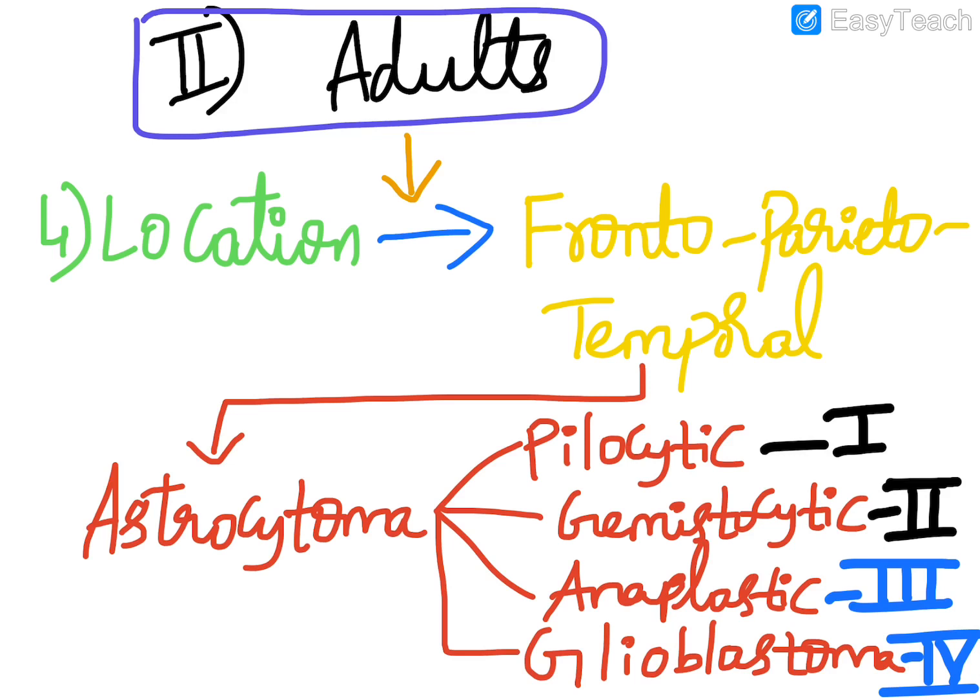Previously, glioblastoma multiforme was the term used for grade four astrocytoma, but the term 'multiforme' has been removed. It is now called simply glioblastoma, which is the grade four type of astrocytoma.